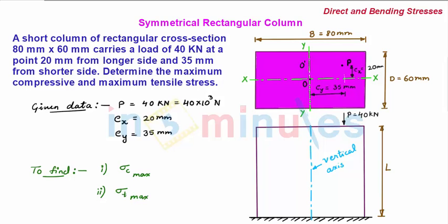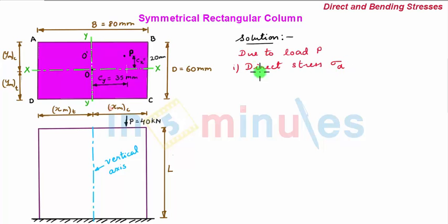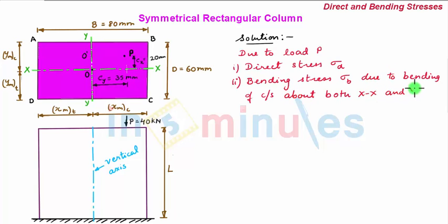So let's solve the problem. Due to load P there will be both direct stress sigma_D and bending stress sigma_B, due to bending of the cross-section about both centroidal xx-axis and centroidal yy-axis.